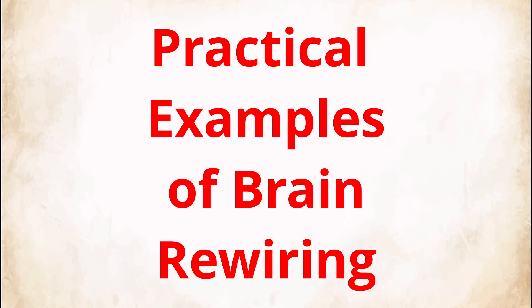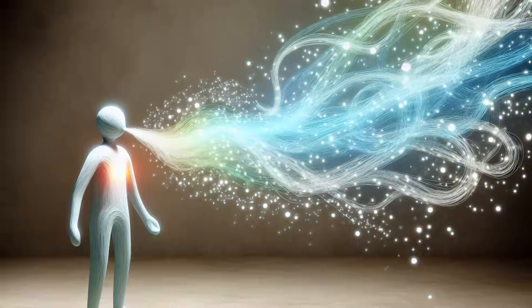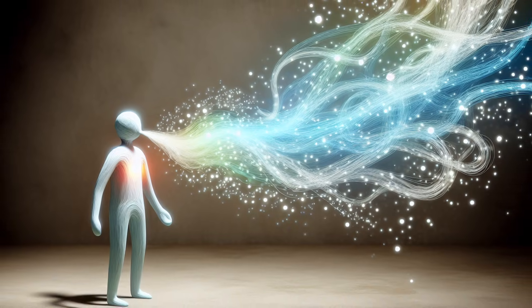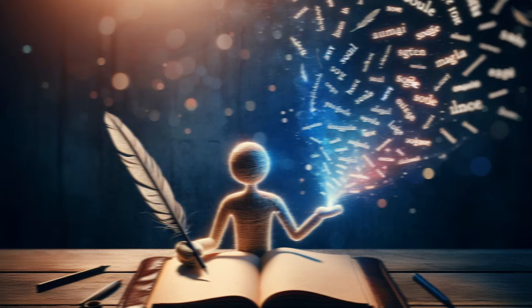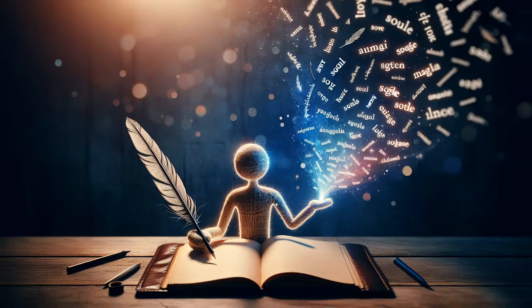Practical examples of brain rewiring. So how can you use this in your own life? Let's look at a few examples. If you're learning a language, spend 10 minutes practicing vocabulary or speaking aloud. Over weeks, those 10-minute bursts create strong pathways that make recalling words automatic.